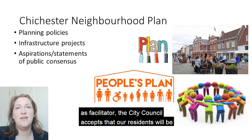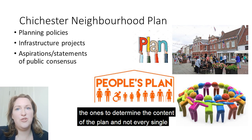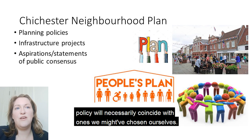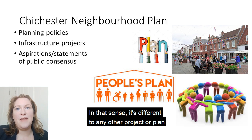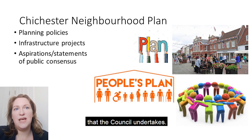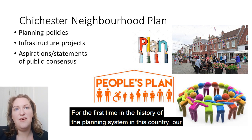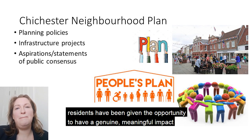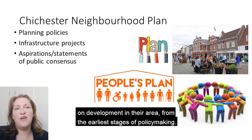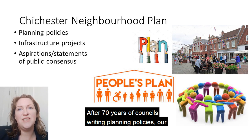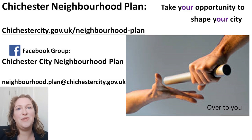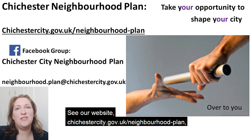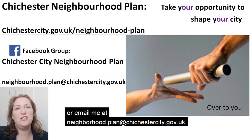In taking this role as facilitator, the City Council accepts that our residents will be the ones to determine the content of the plan and not every single policy will necessarily coincide with ones we might have chosen ourselves. This in many ways is the whole point of this type of plan — that's what's really important about it. In that sense it's different to any other project or plan that the council undertakes. For the first time in the history of the planning system in this country, our residents have been given the opportunity to have a genuine, meaningful impact on development in their area from the earliest stages of policy making. After 70 years of councils writing planning policies, our residents are taking up the pen. Good luck! Join us on our Facebook group Chichester City Neighbourhood Plan, see our website chichestercity.gov.uk/neighbourhood-plan, or email neighbourhood.plan@chichestercity.gov.uk.